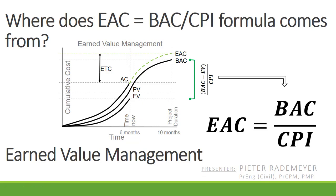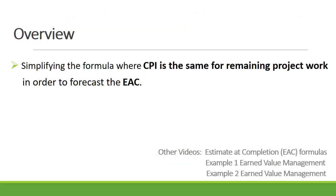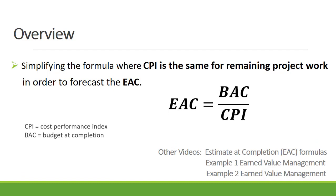In this video I'll be showing you where the formula estimate at completion equals budget at completion divided by CPI comes from, which is used during forecasting in earned value management. The formula most often provided in learning material is estimate at completion equals budget at completion divided by CPI.